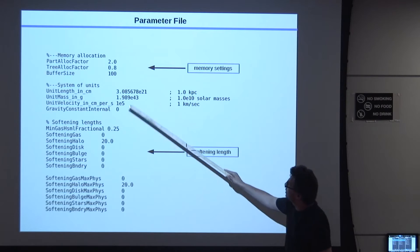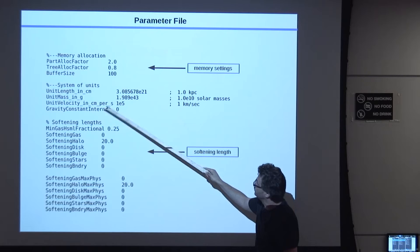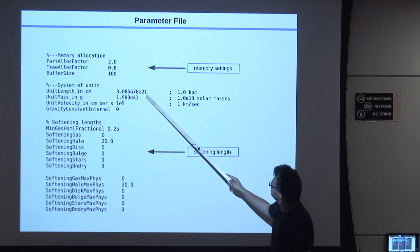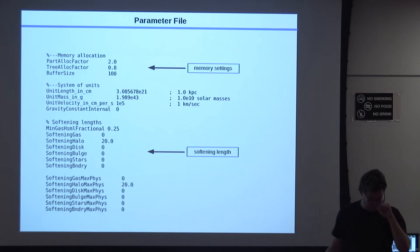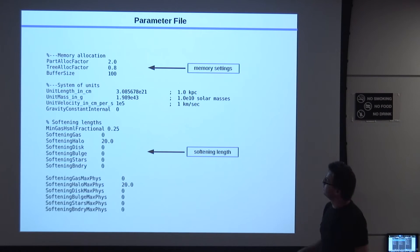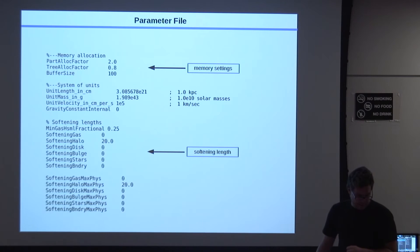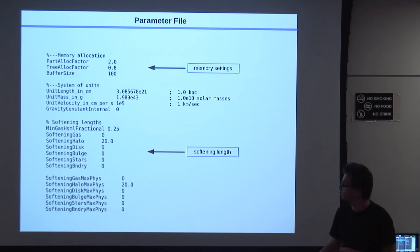Then the memory, we don't have to discuss this now, but this is the system of units. This is just specified in CGS, essentially. So the unit length in centimeter is, for most of the calculations we do, it's kiloparsec. Sometimes people use megaparsec. So this is approximately 3 times 10 to the 21 centimeters. The mass unit is always 10 to the 10 solar masses. So if you read mass from the output, it will be in units of 10 to the 10 solar masses. And the velocity is just in kilometers per second.